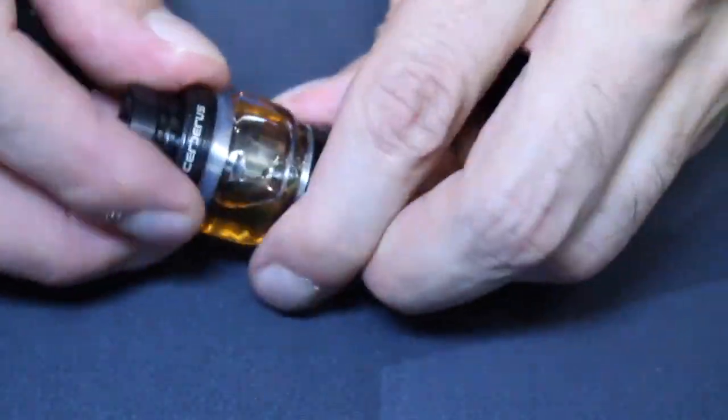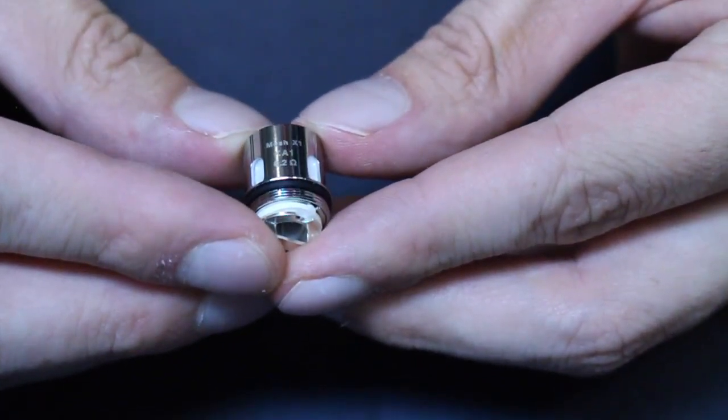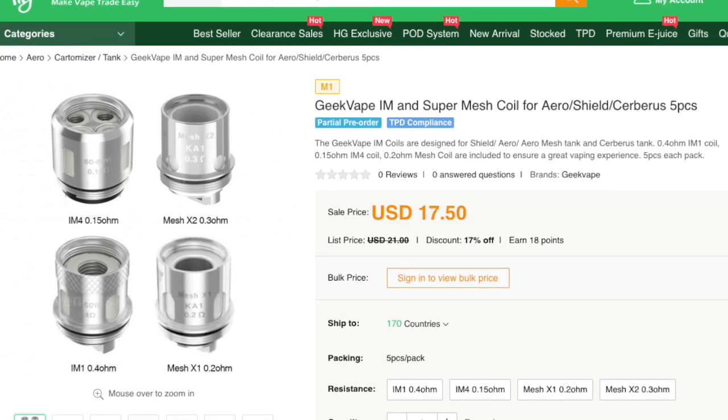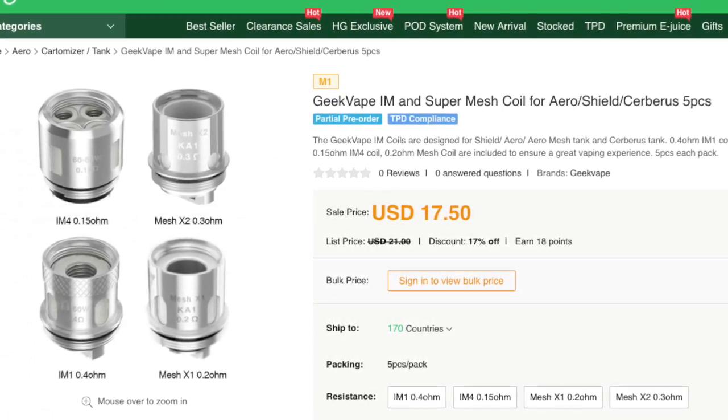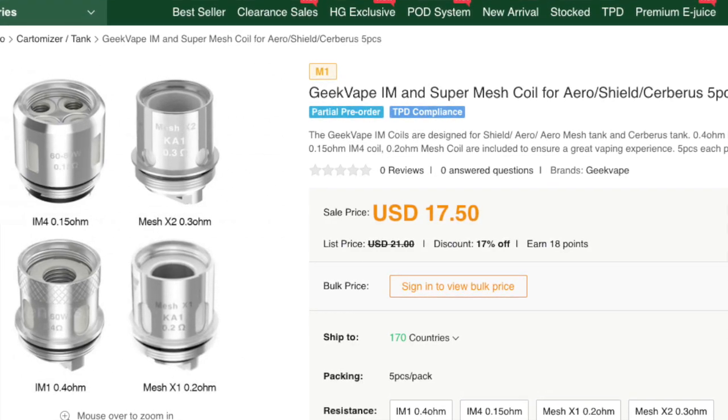The Cerberus uses what GeekVape is calling a Super Mesh Coil System. I'm not sure what makes it Super Mesh, but honestly, these coils kick ass. They're the same coils used in GeekVape's Illusion Mini Tank, the Aero Mesh Tank, and the Shield Tank. So if you're looking for replacements, you'll probably find them listed as IM and Aero Mesh Coils.